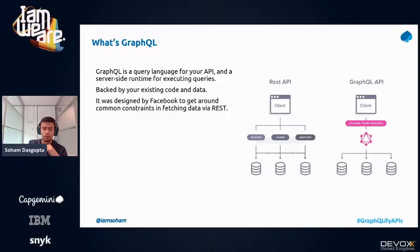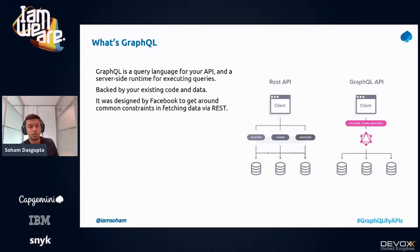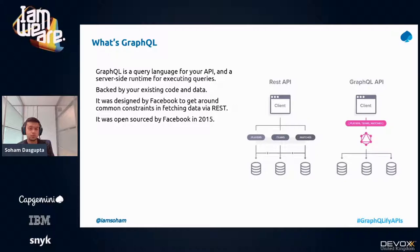A little bit of history about GraphQL. It was designed by Facebook because they wanted to get rid of the limitations of REST API. They didn't want to burden their mobile applications in low bandwidth regions with everything to query. It was open sourced in 2015, and from then onwards a lot of things happened within this space.